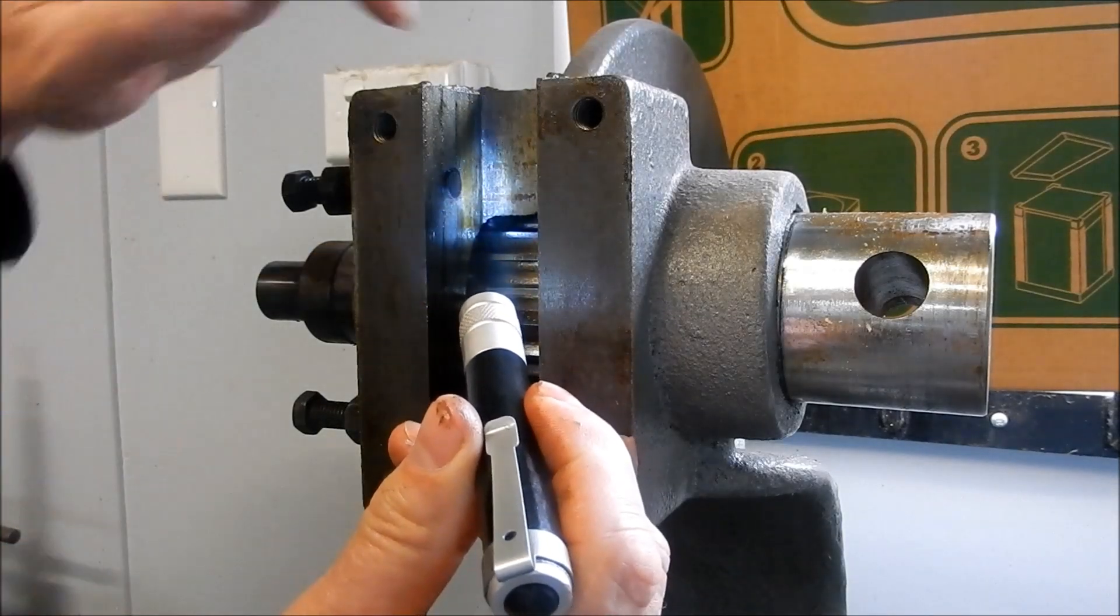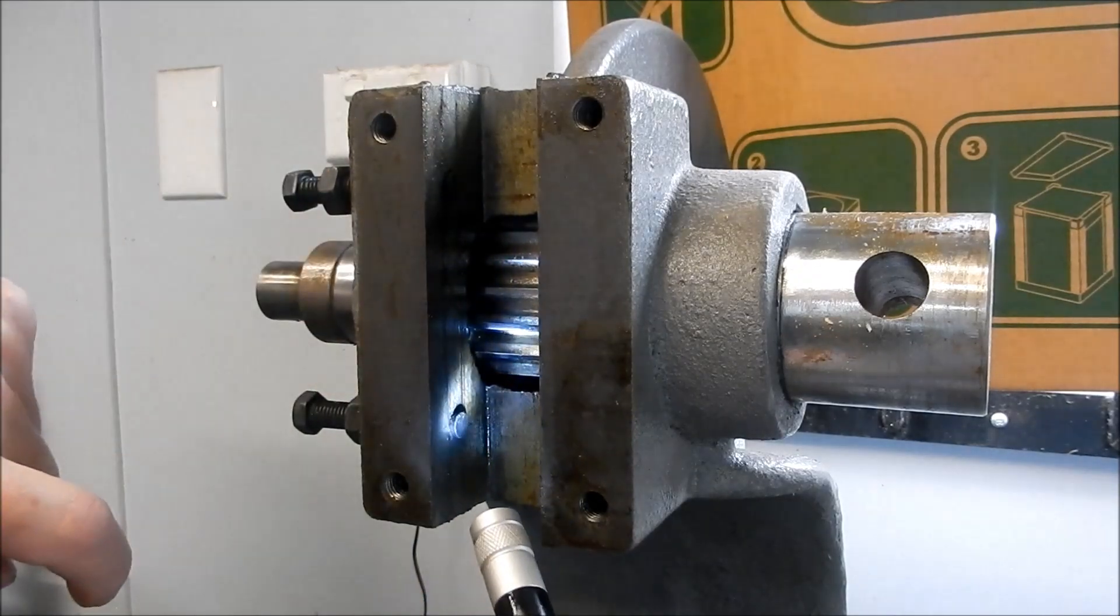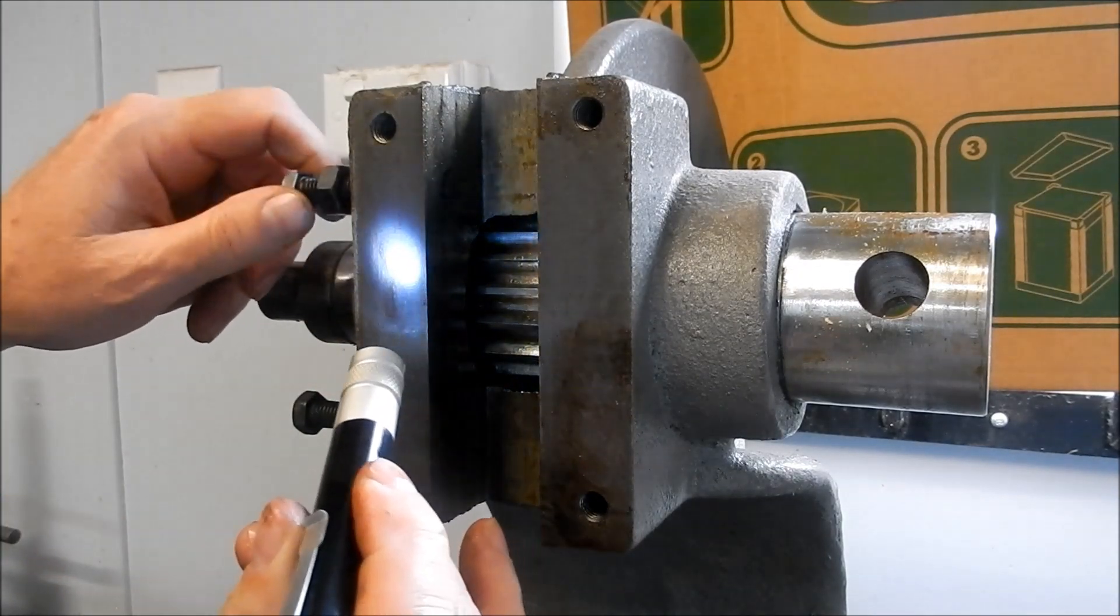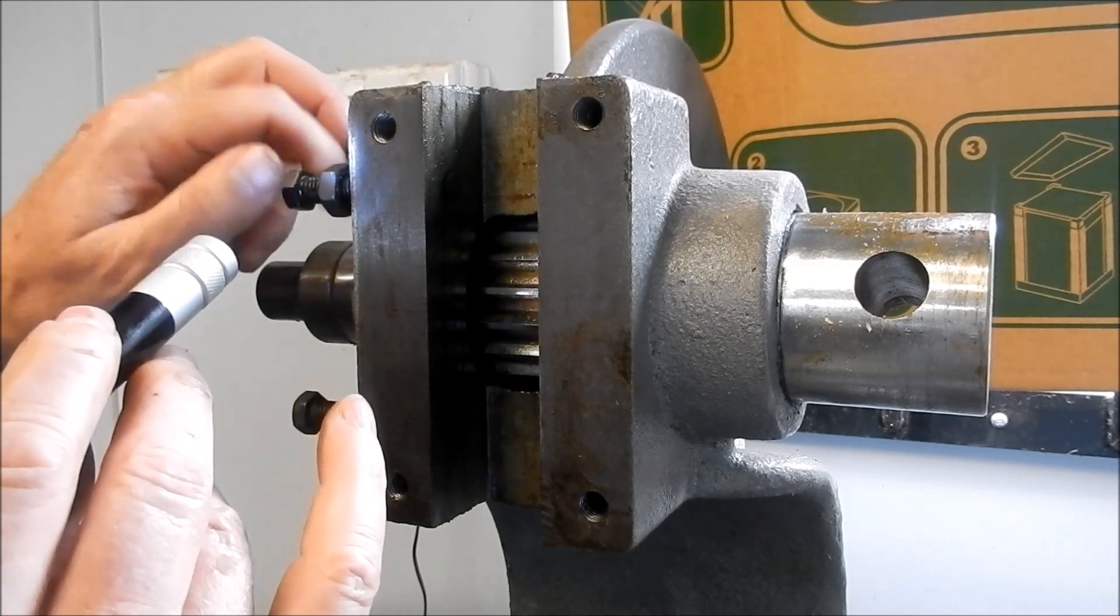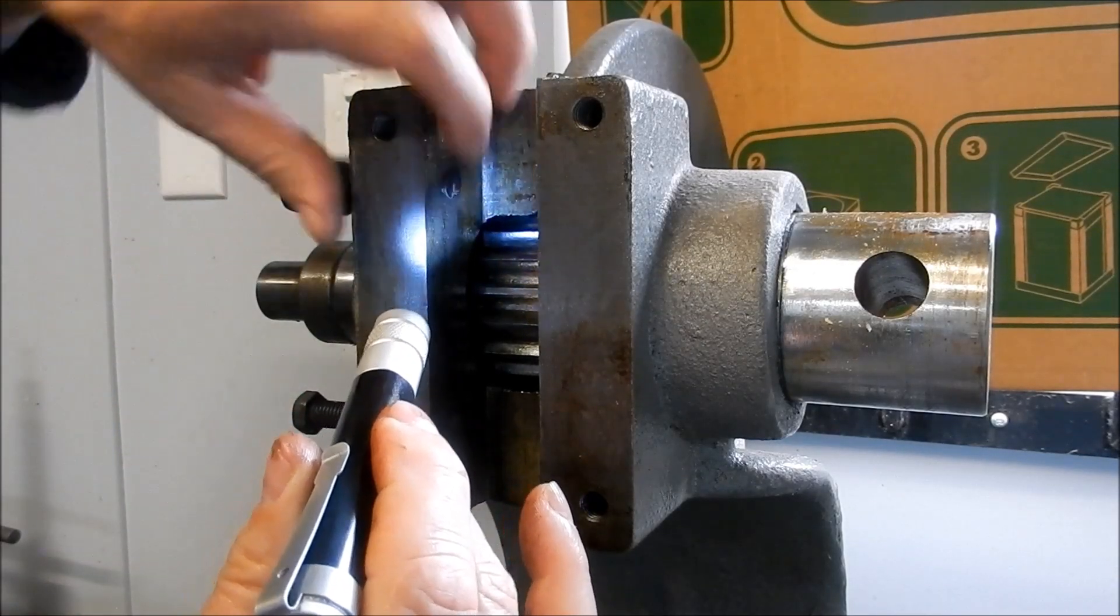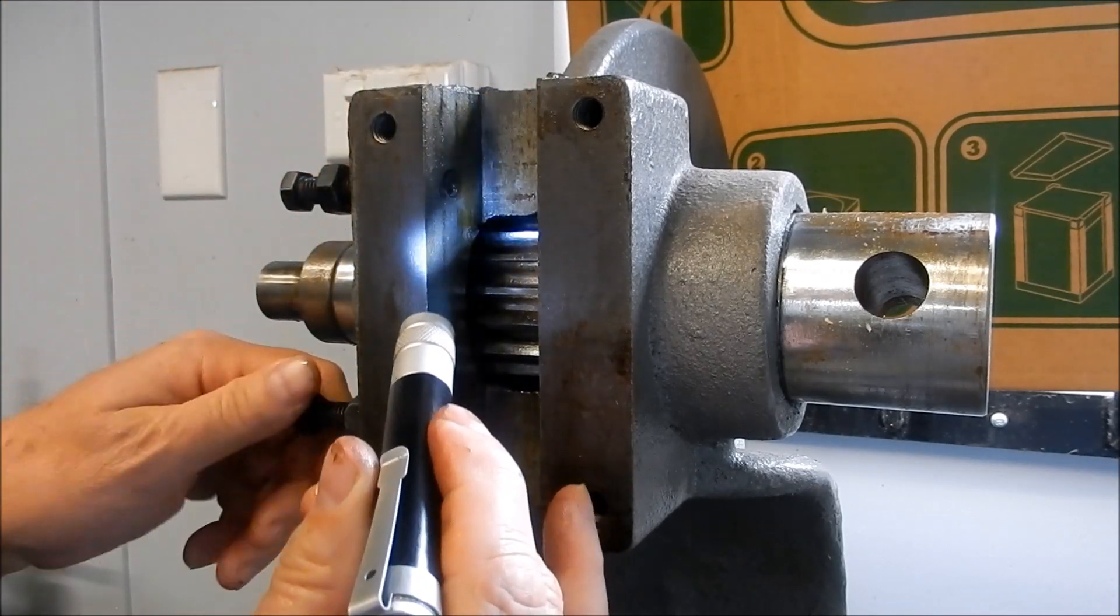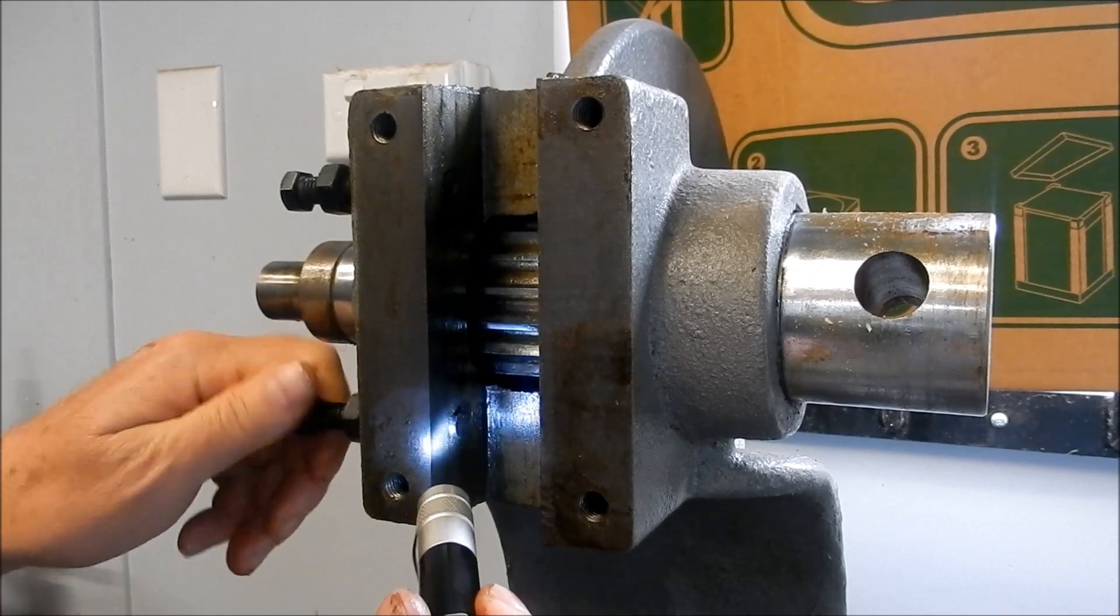So all I've done, I hope you can see that, is I've just made up some little Delrin buttons that sit inside the threaded holes of the adjusting bolts. And we just screw them in and out as required just to set the tension onto the ram. And that just sets that drag up for us quite nicely.